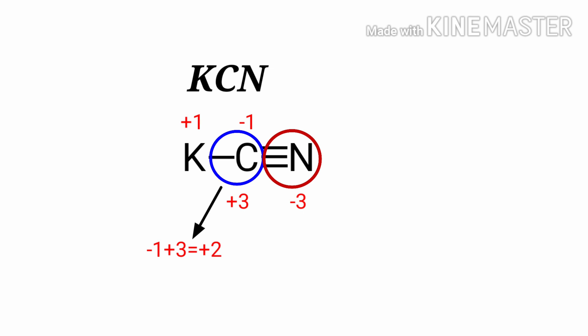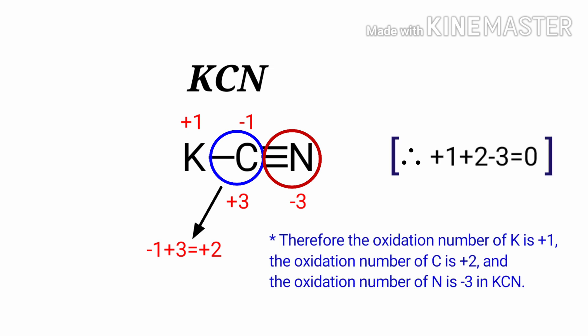So the average oxidation number of carbon is minus 1 plus 3, that is plus 2. Therefore, the oxidation number of potassium is plus 1, the oxidation number of carbon is plus 2, and the oxidation number of nitrogen is minus 3 in potassium cyanide.